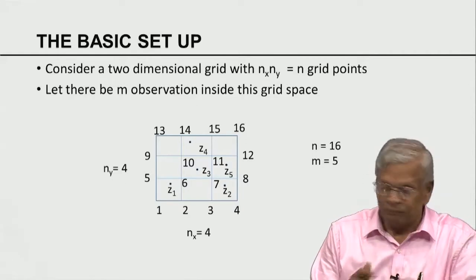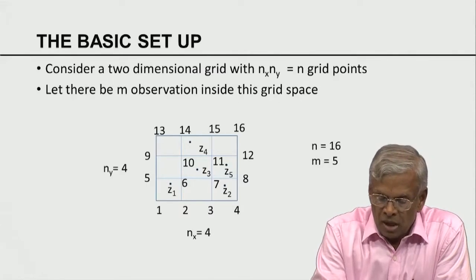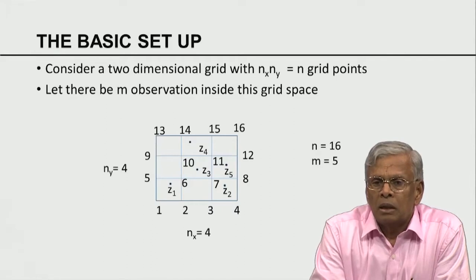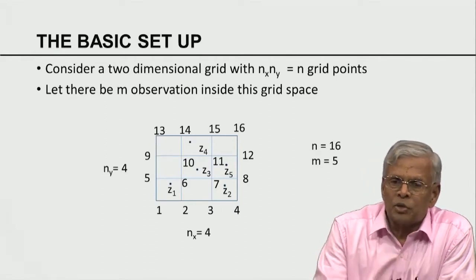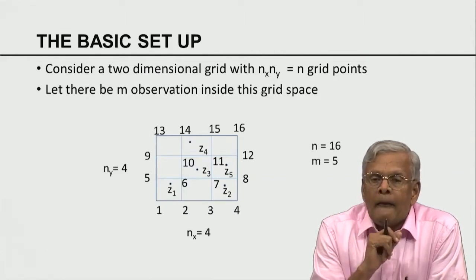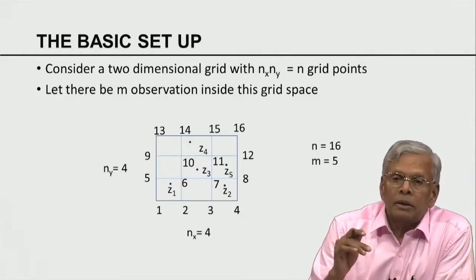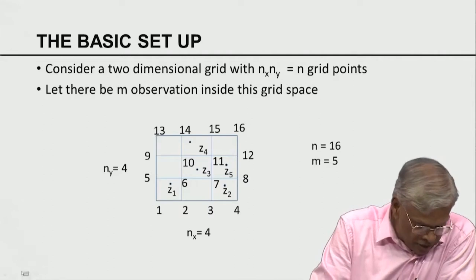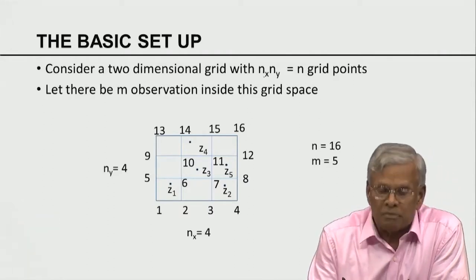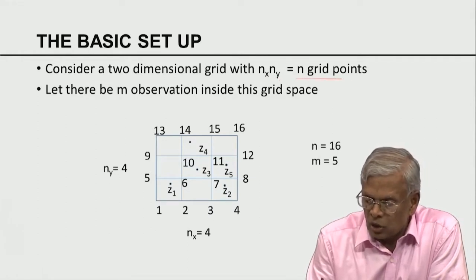What is the basic idea of this method called optimal interpolation? I am going to illustrate this notion using a simple 2D grid problem, which can be extended to a 3D grid as well. Consider a 2-dimensional grid with nx times ny number of points, where nx is the number of points along the x direction, ny along the y direction, and n is the total number of grid points.